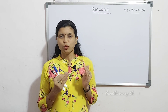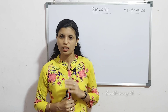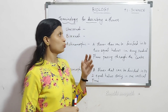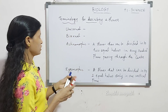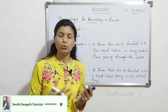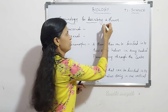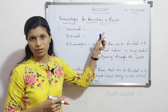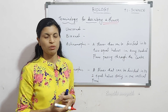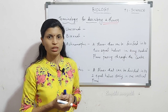In this video, we will discuss important terminologies. The first terminology is unisexual. What is a unisexual flower? A flower with either androecium or a gynoecium. Androecium is the male reproductive part of a flower, and gynoecium means the female reproductive part of a flower.